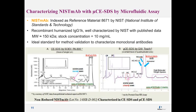For our first experiment, we used NIST standard molecular antibodies called NIST MAB — NIST reference material A671 — a recombinant humanized IgG1κ well-characterized by NIST, with published data, a molecular weight of 150 kilodaltons, and stock concentration of 10 milligrams per mL. We ran it on two devices: the ABCIX P800, shown on the left, and the microfluidic IntelliChip technology, the GX Touch, shown on the right.